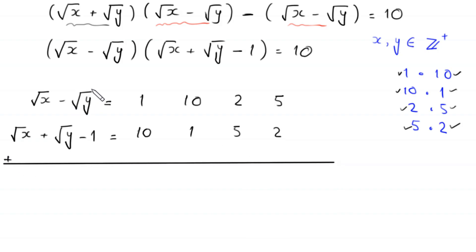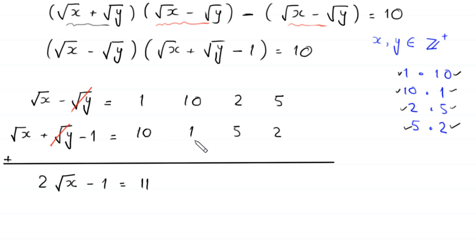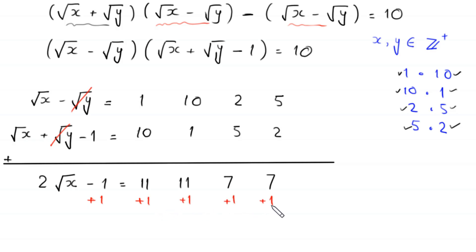When we add the two equations in each case, the root y terms cancel out, and 1 times root x plus 1 times root x gives 2 times root x, while negative 1 minus 1 appears on the left. So 2 root x minus 1 equals 10 plus 1 giving 11, or 2 plus 5 giving 7, and 5 plus 2 giving 7. Adding 1 to both sides in each case gives 2 root x equals 12, 12, 8, or 8.